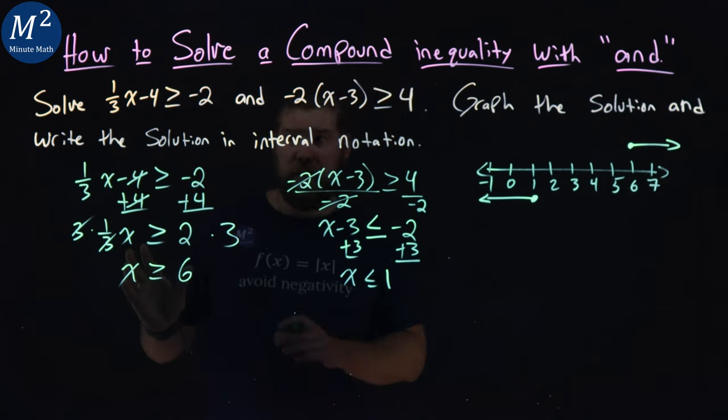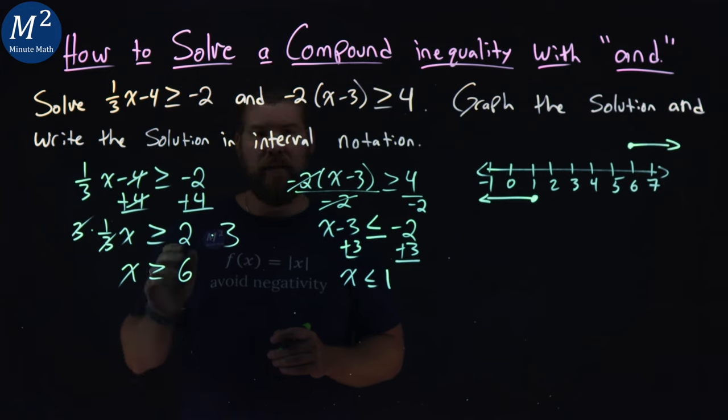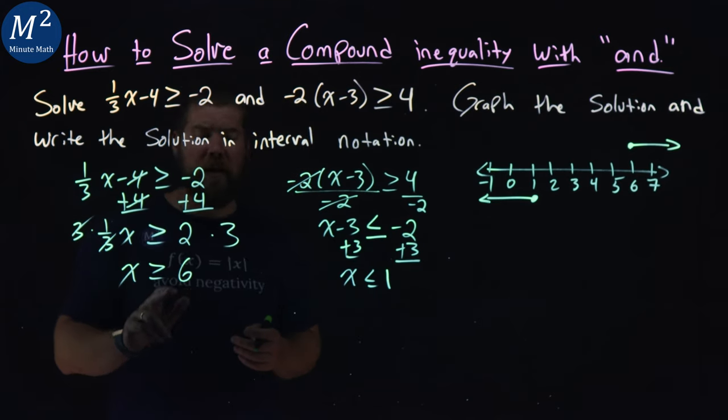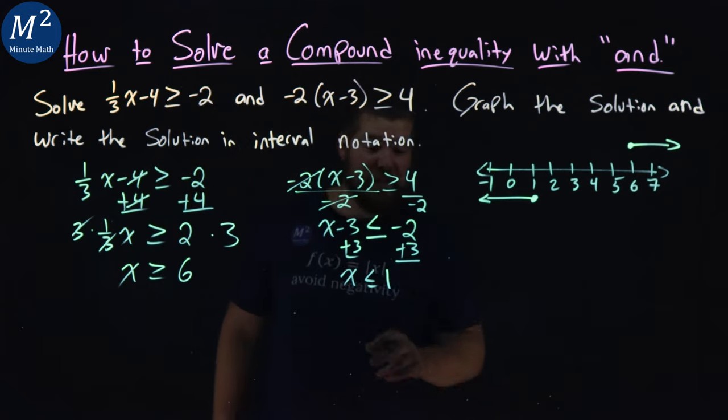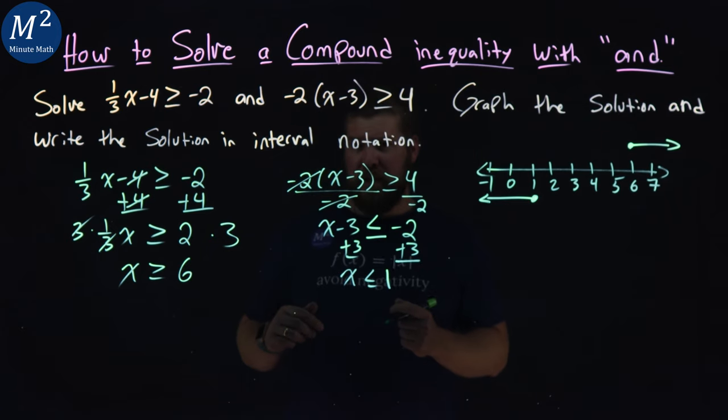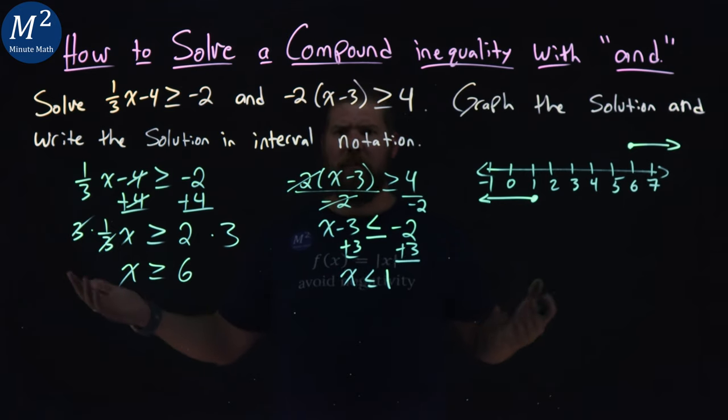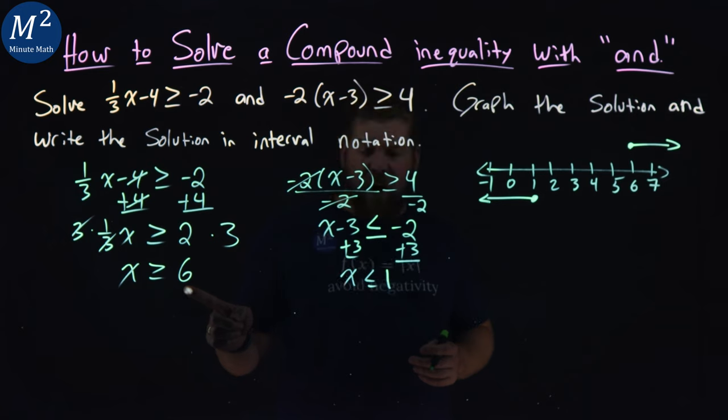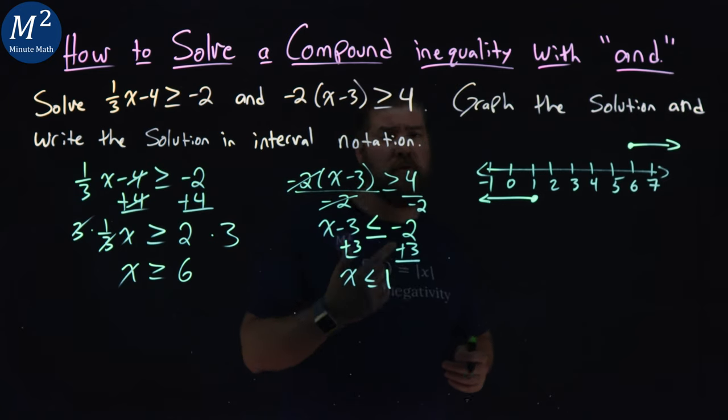Our first set says x has to be greater than or equal to 6, and x has to be less than or equal to 1. If that was a puzzle given to you, you would ask, 'What number is that?' We can't find any number where x ≥ 6 but also x ≤ 1.